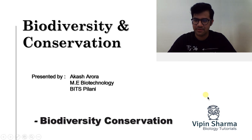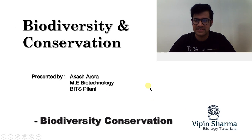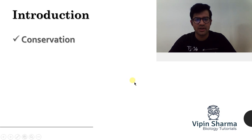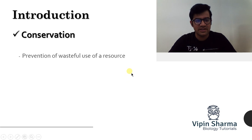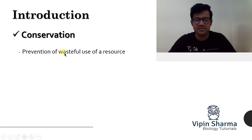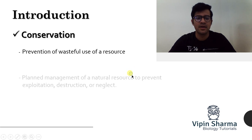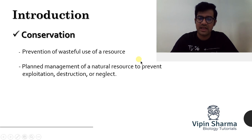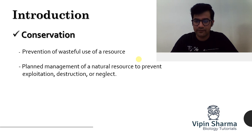This is Akash here for Vipin Sharma Biology Tutorials. Today I am going to start with biodiversity conservation. So let's talk about the term conservation itself first. Conservation refers to the prevention of wasteful use of resources. That means for preventing this wasteful use of resources we need to have a planned management of that natural resource.